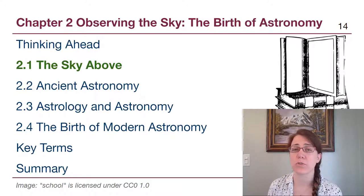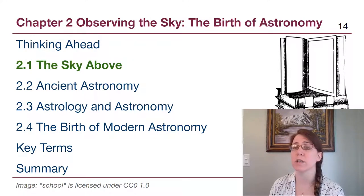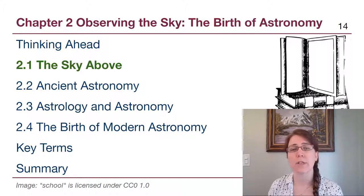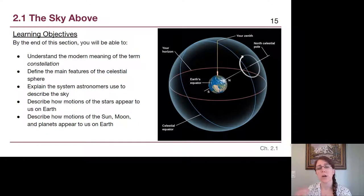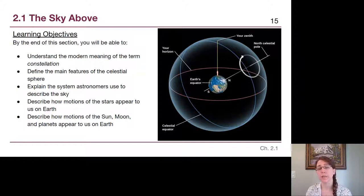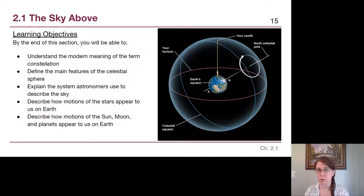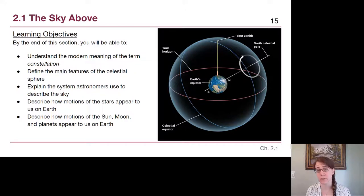Many students find this section to be one of the most difficult we cover all semester because it involves visualizing three-dimensional motions in a way that we haven't necessarily paid attention to the sky before. There are a lot of key learning objectives in section 2.1. We need to understand the terms that come up not because we are memorizing definitions for the sake of it, but because we need those terms in our vocabulary to build critical thinking skills around these topics.